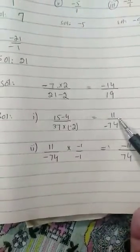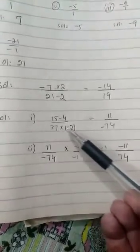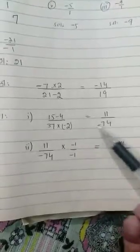So 15 minus 4 is 11, and then 37 multiply 2 is 74. 37 is plus, 2 is minus, plus into minus is minus. So this is the answer.